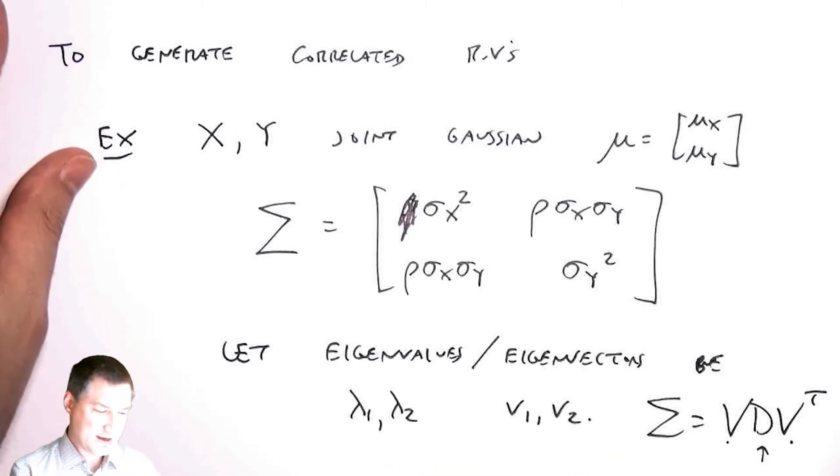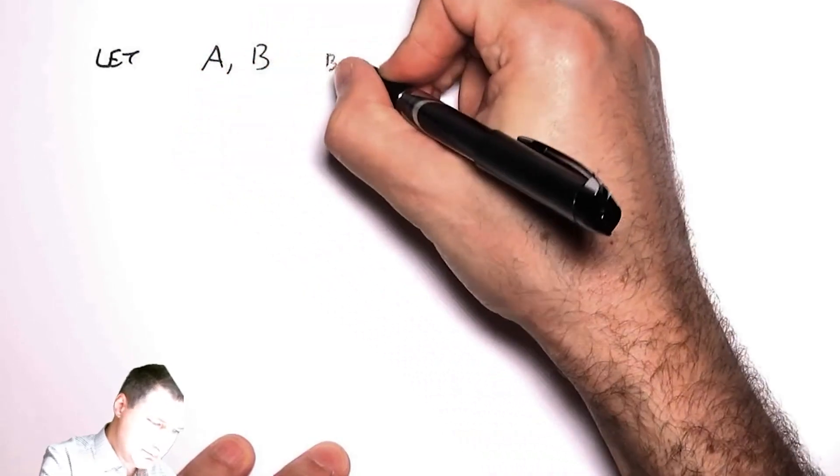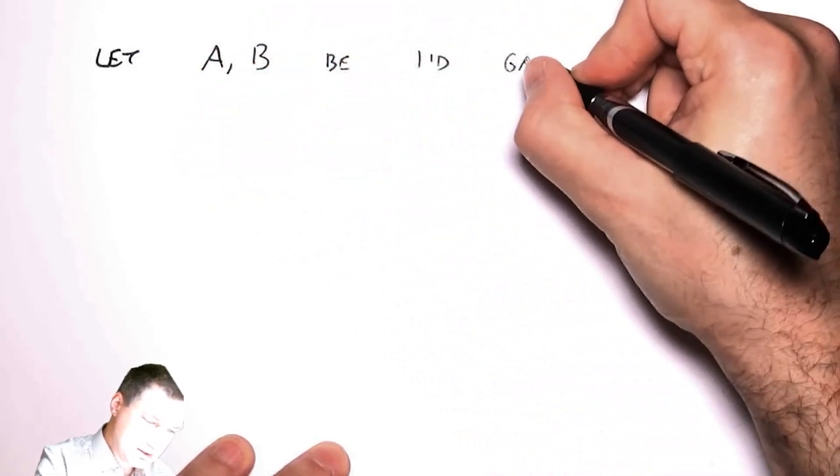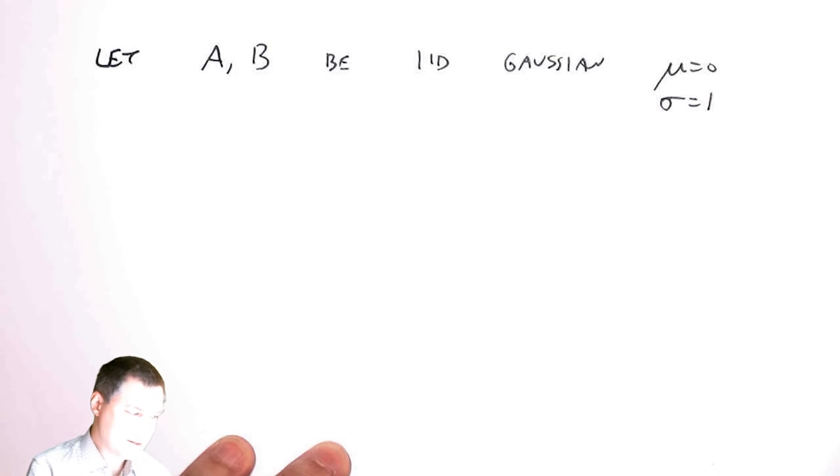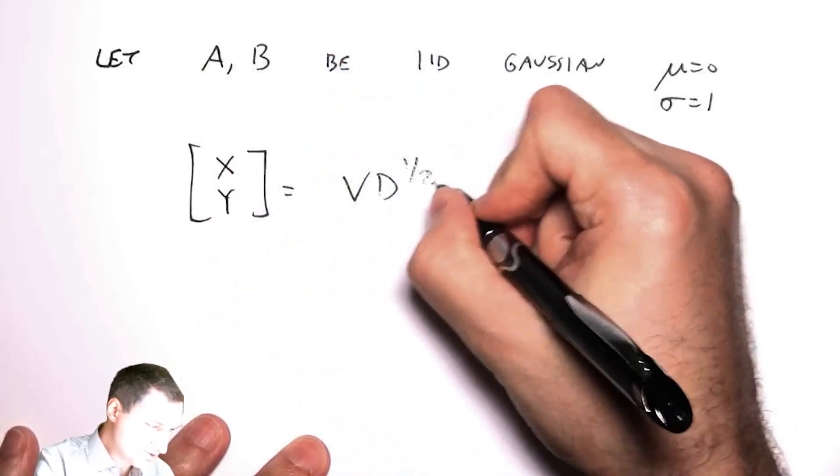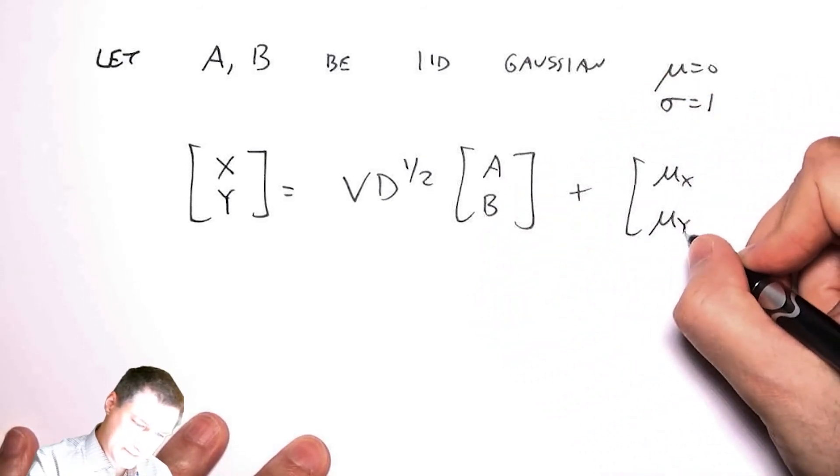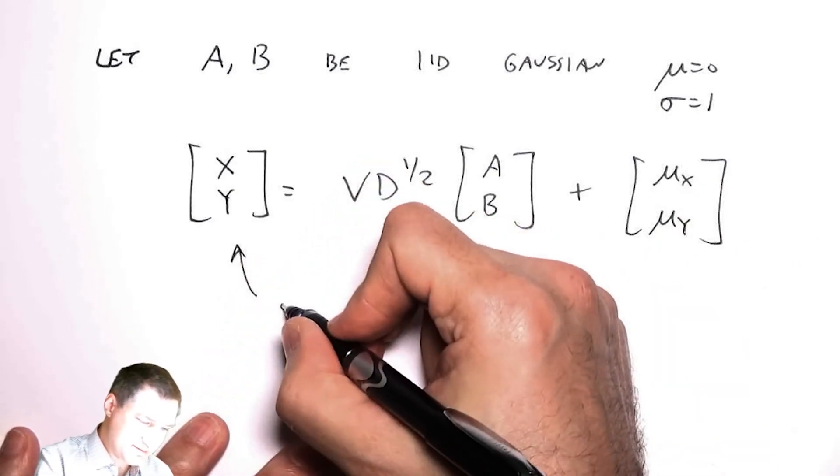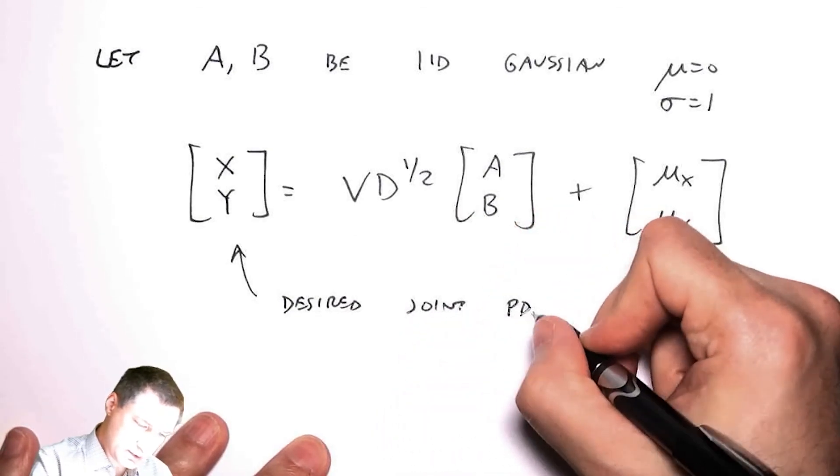Then how do I generate correlated random variables? If I let A and B be iid Gaussian, mean zero, sigma 1 random variables, say I did that with the previous method, then you can show that I can transform those into correlated random variables with this formula. Then these have the desired joint distribution which is correlated.